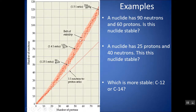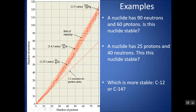To use the belt of stability: plot the number of protons and neutrons to find a point. If it falls within the belt or band of stability, it's stable. If it falls outside the belt or band of stability, it is unstable.